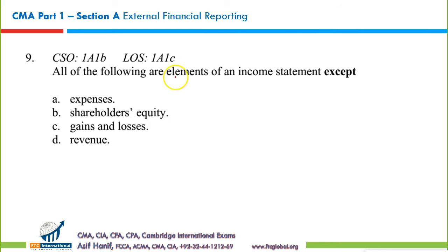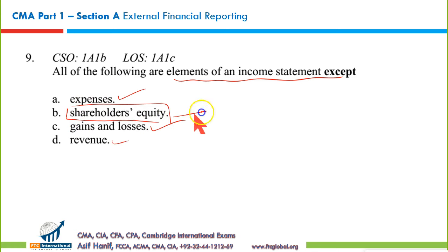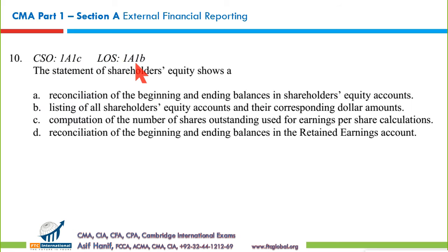Question 9: All of the following are elements of the income statement except... Expenses, gains and losses, and revenue are all reported in the income statement. Shareholders' equity is reported on the balance sheet — making B the correct option.